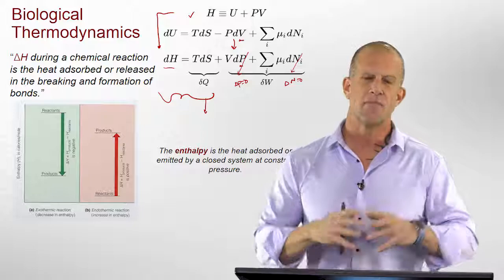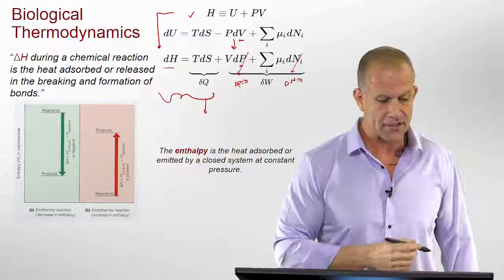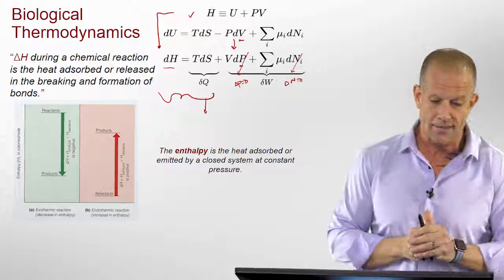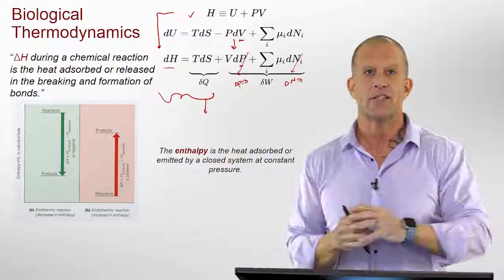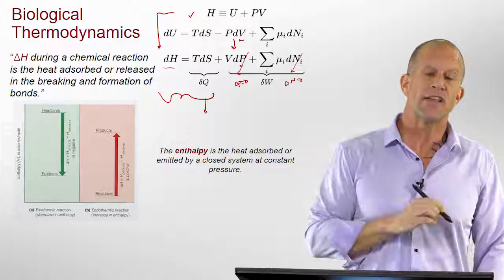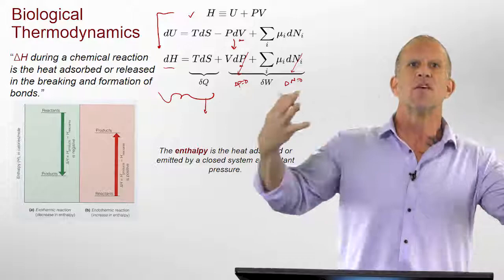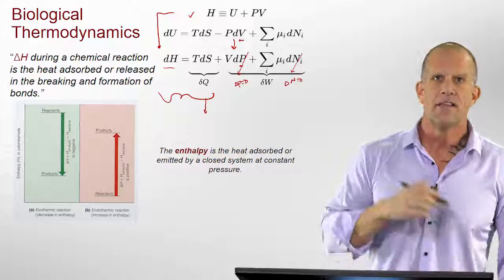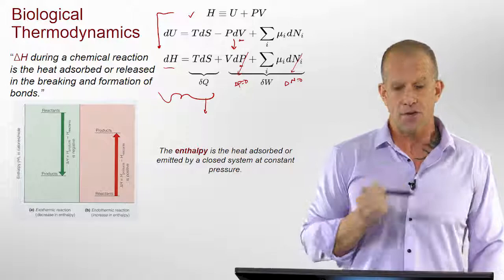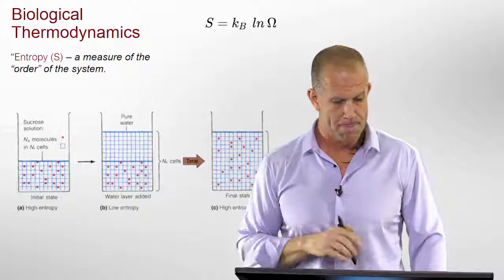We even use the terminology that if delta H is negative, the process is exothermic — it releases heat into its surroundings. If delta H is positive, it's endothermic — it requires heat into the system for that type of process to happen. Enthalpy ends up being very useful because of its direct relation to the energy of heat under constant pressure conditions for biological systems.